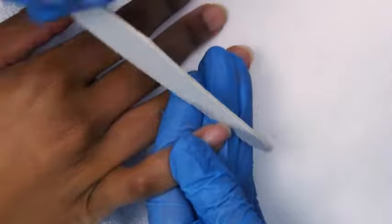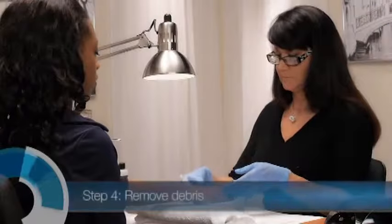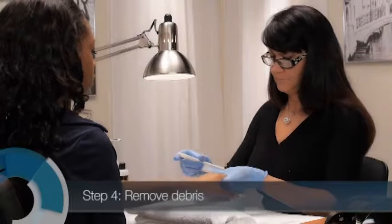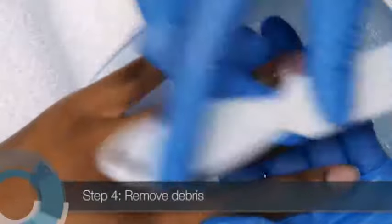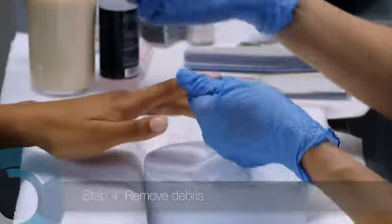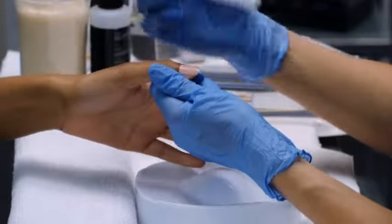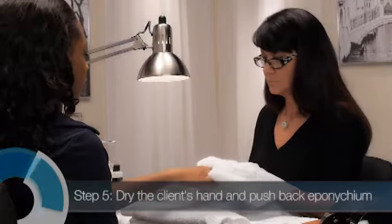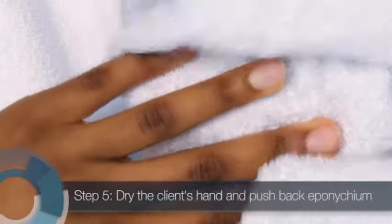File the right hand nails the same as you did the left, from the little finger to the thumb. After you file the right hand, remove the left hand from the finger bowl and brush the fingertips with a wet nail brush to remove any debris. Brush with downward strokes from the first knuckle to the free edge. Dry the client's hand with her designated service towel, gently pushing back the eponychium with the towel as you dry.